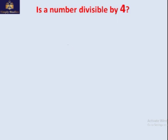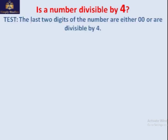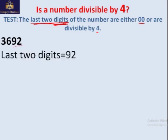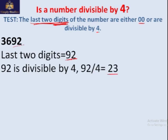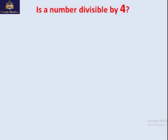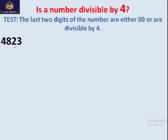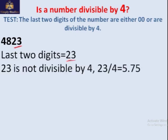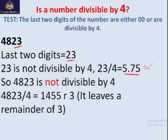Is the number divisible by 4? The rule is: the last two digits should be either 00 or divisible by 4. For example, if the last two digits are 92, and 92 is completely divisible by 4, then the whole number is also divisible by 4 with no remainder. Another example: 4823 — the last two digits are 23. Is 23 divisible by 4? No, it results in a decimal, not an integer, so 4823 is not divisible by 4.